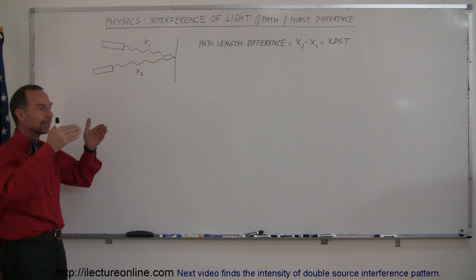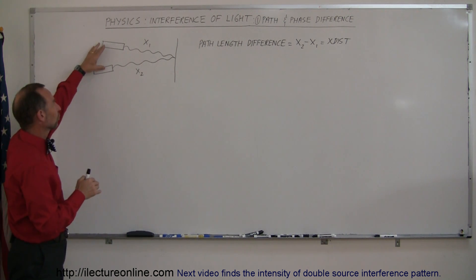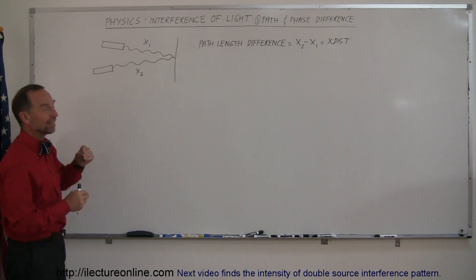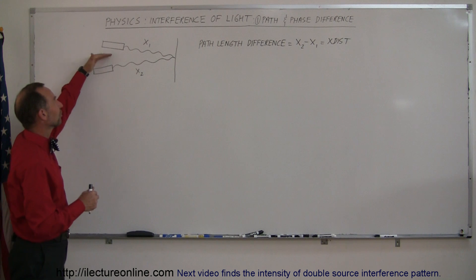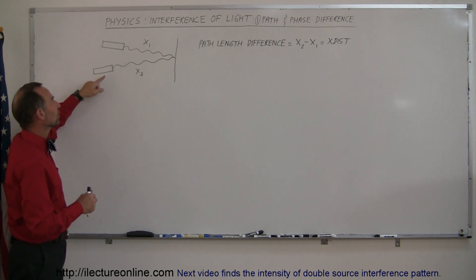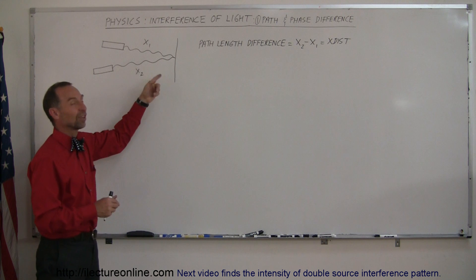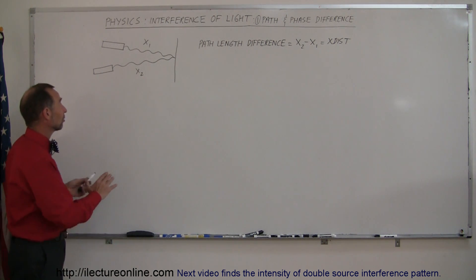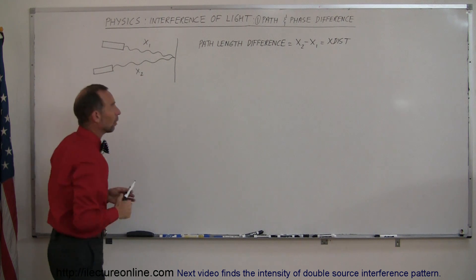When two beams of light come together from sources of the same type — putting out light of the exact same wavelength and exact same intensity — but one is placed slightly different from the other, the light has to travel a different distance from one source compared to the other. In this case, the distance x2 is a little bit larger than the distance x1.